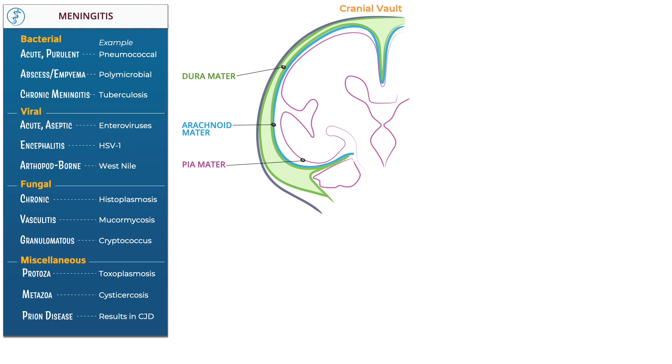Next, draw the meningeal spaces. The epidural space, specify that no true space exists in the cranium, but it does in the spinal canal. Then the subdural space, then the subarachnoid space. Show that pachymeninges refers to the dura mater, then that leptomeninges refers to the combined arachnoid and pia mater. This is an important anatomical distinction.